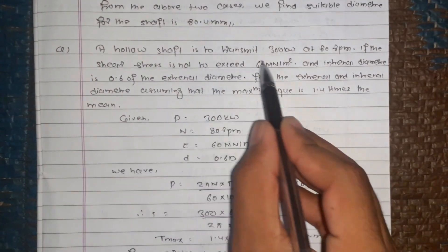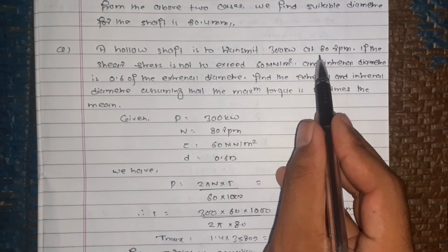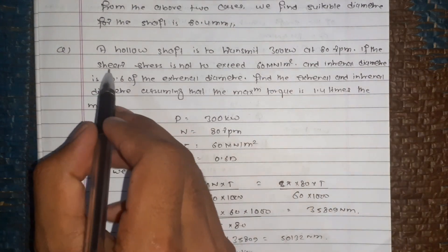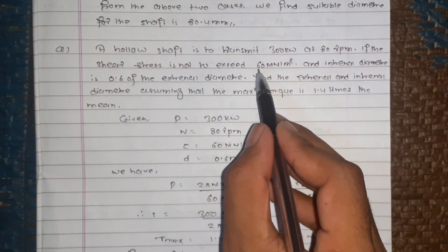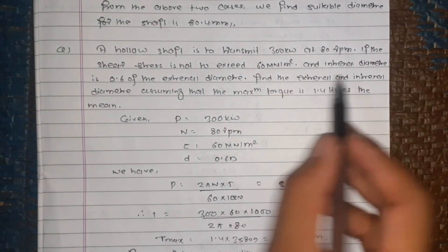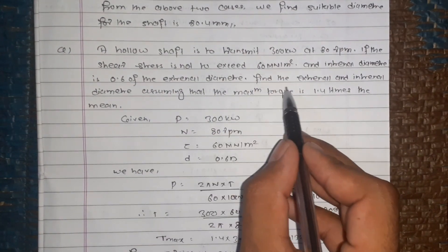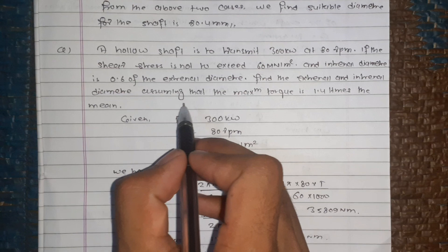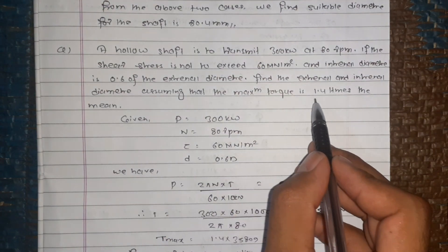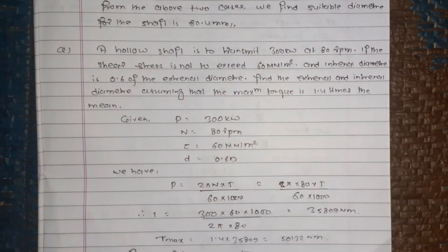A hollow shaft is to transmit 300 kilowatt at 80 revolutions per minute. If the shear stress is not to exceed 60 meganewton per meter square and the internal diameter is 0.6 of the external diameter, find the external and internal diameter assuming that the maximum torque is 1.4 times the mean.